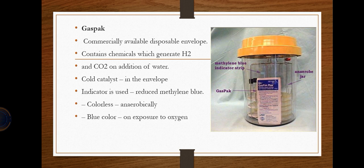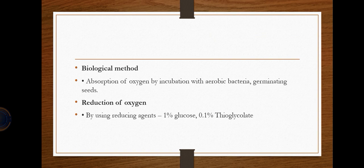The GasPak also contains a methylene blue indicator strip — anaerobic bacteria produce colorless results, but when oxygen is present it turns blue. The biological method involves absorption of oxygen by incubation with aerobic bacteria or germinating seeds, which consume all available oxygen. A reduction method uses reducing agents such as one percent glucose and 0.1 percent thioglycollate to remove oxygen.